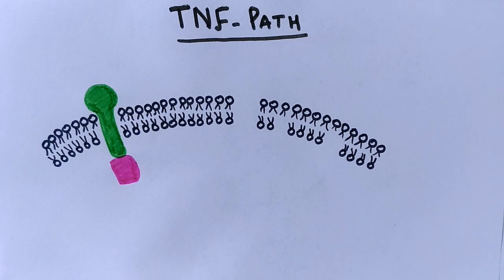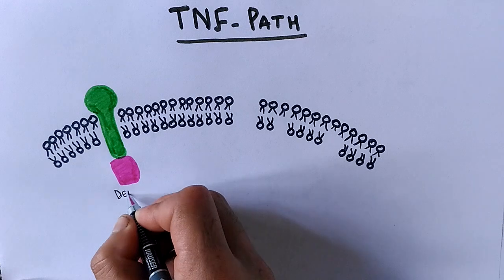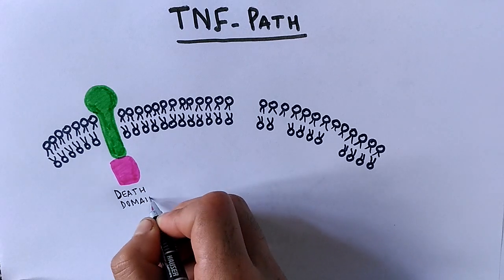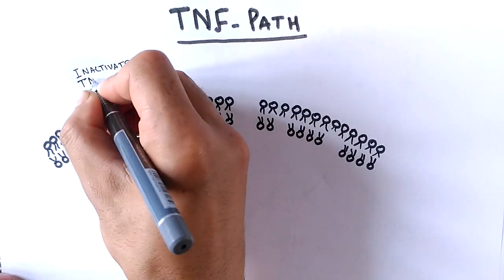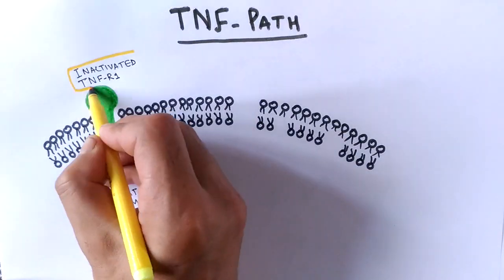The intracellular death domain is silent prior to the apoptotic signal. Once it receives the apoptotic signal it gets activated. So we call it inactivated TNFR1 receptor because it has not received any signal yet.